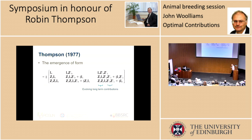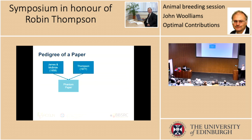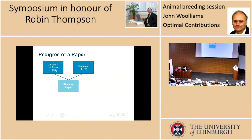Robin notes in that paper that these contributions are actually relating to numbers of descendants for particular generations. I didn't think it was quite ready for the Ray and Thompson paper, so I had to introduce a phantom paper which I think could have been written about the combination of those two, because we're missing one very important contribution to the Ray and Thompson paper.